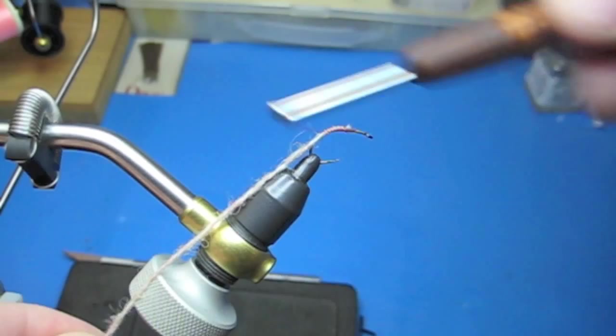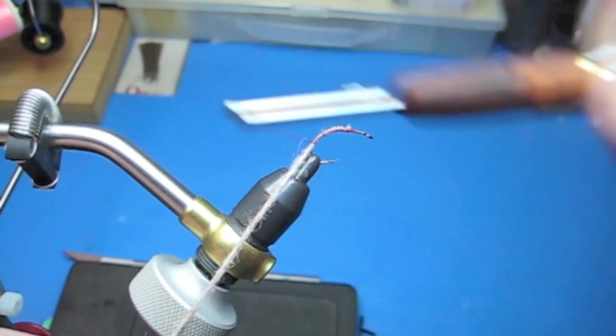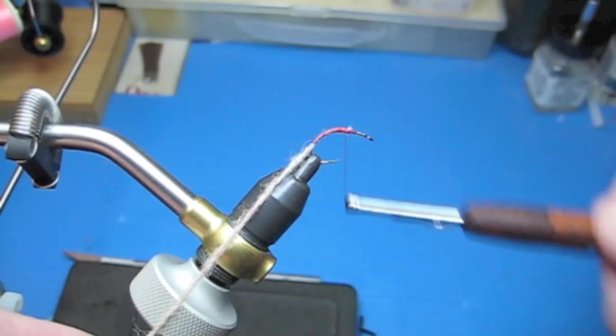Take it all the way to the back. Now sometimes I will put a little gold wire tag back there, particularly if I put extra weight. But in this example I'm not doing that right now.